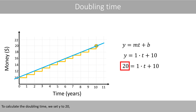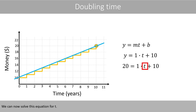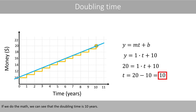To calculate the doubling time, we set Y to twenty, because that is twice as much as the initial amount. We can now solve this equation for T. If we do the math, we see that the doubling time is ten years.